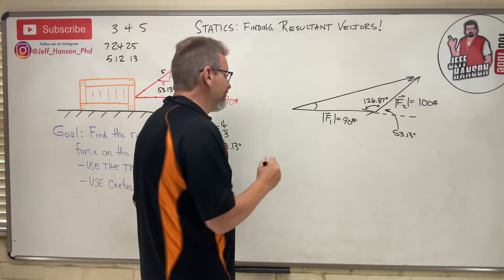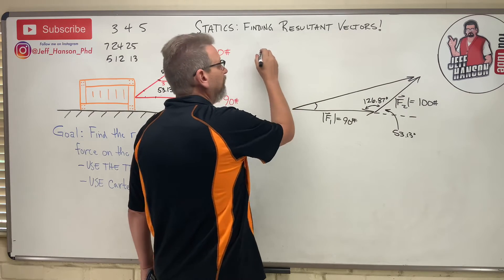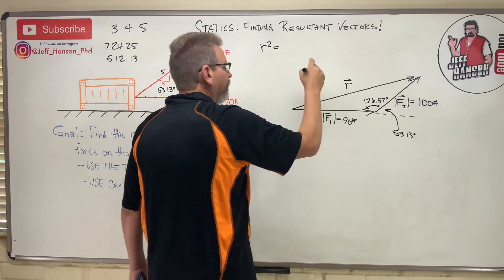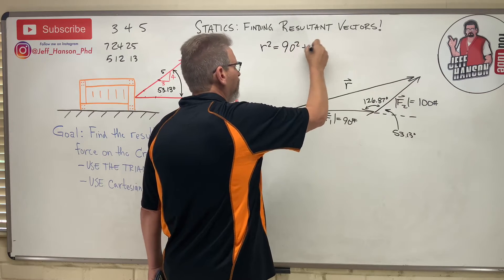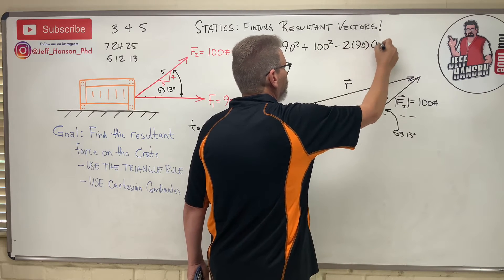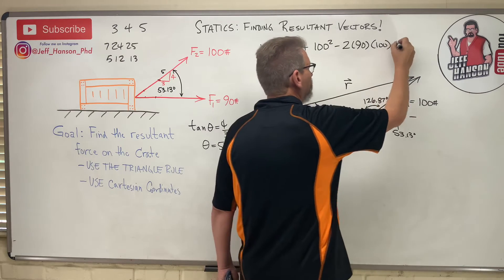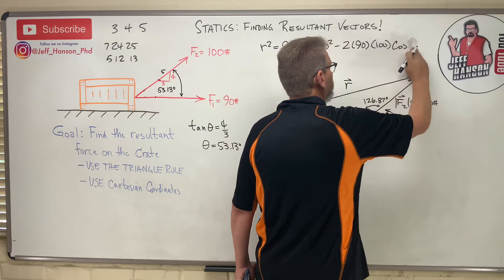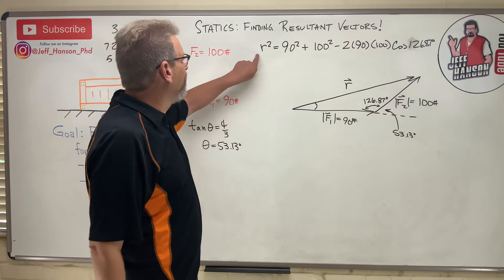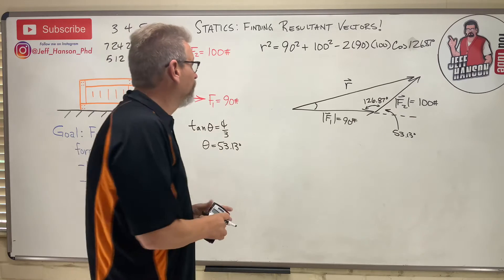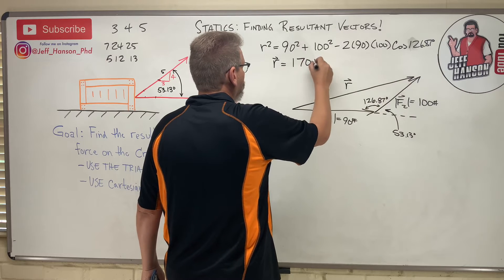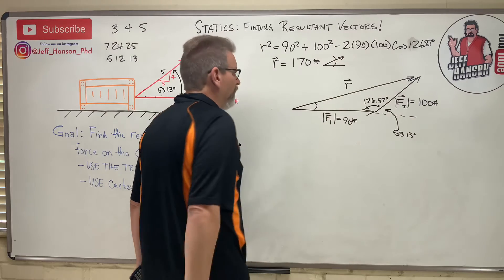We have side-angle-side (SAS), so we use the law of cosines. R² = 90² + 100² − 2(90)(100)cos(126.87°). Remember to take the square root at the end. Solving this gives R = 170 pounds. But we still need the direction angle.